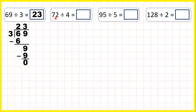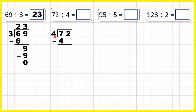Now 72 divided by 4, so we write the question out in the same way. Taking the first digit, we have 7 divided by 4. But 7 isn't in the 4 times table, so we need to find the closest multiple of 4 to 7 which is still less than 7. That's 4, because if we went to 8, that would be too many.